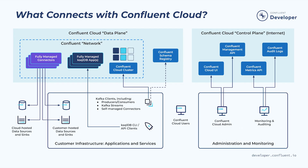To sum it all up, this is what Confluent Cloud looks like from a network architecture perspective. We have the control plane, which is always accessed over the internet and is used for provisioning, managing, and monitoring. Most importantly, we have the data plane, which has the internet-accessible schema registry as well as your Confluent network, which can be accessed over a secure public endpoint, over a peering connection either directly or through a transit gateway, or over a private link connection.